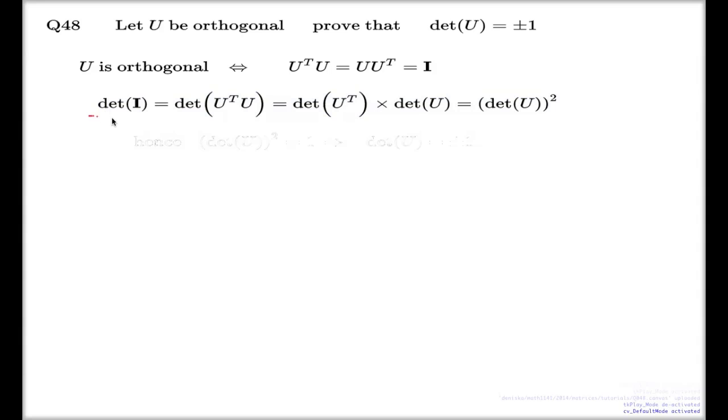So, you have one equal to determinant of U squared. The only option for that determinant, the only option now you have is that the determinant is plus or minus one.